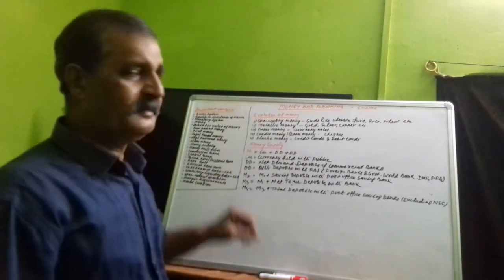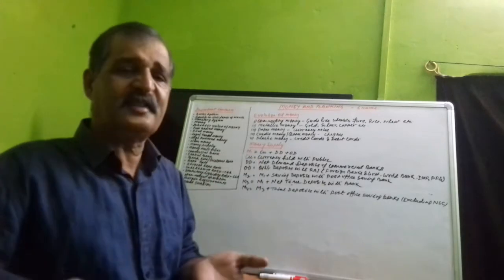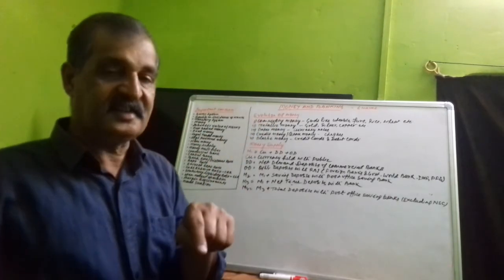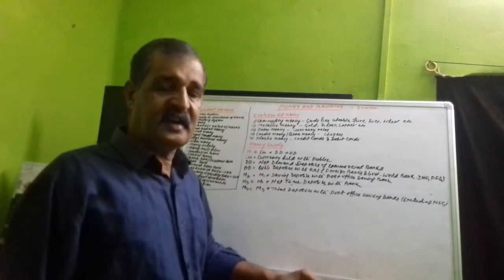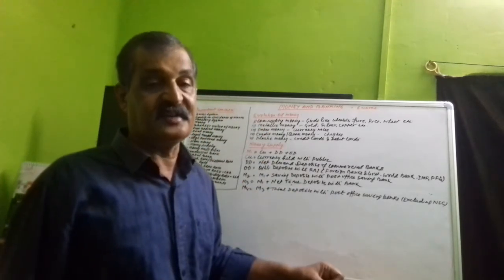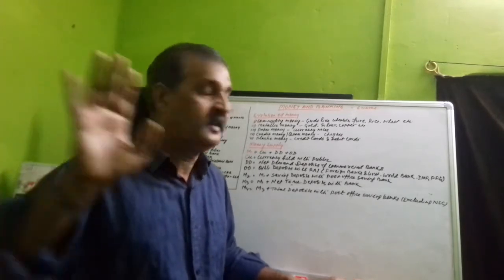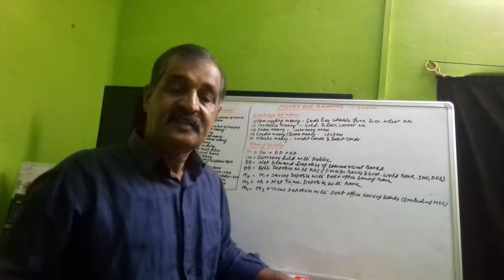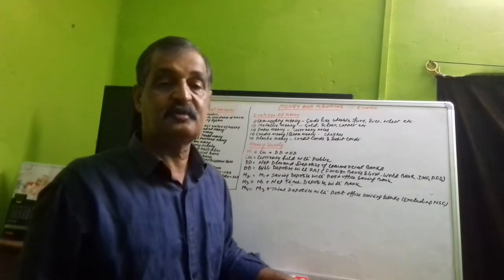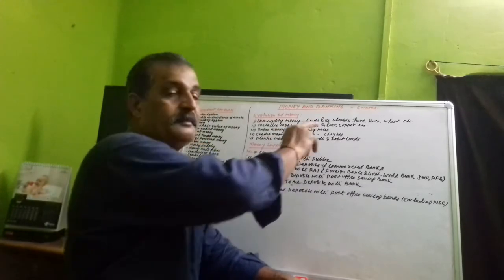Metallic money के बाद इसको carry करना, ले जाना, अगर lost हो जाए, किसी तरह की आपदा हो जाए तो सारे valuables बर्बाद हो जाते थे। इसको facilitate करने के लिए जब 1935 में RBI की स्थापना हुई भारत में, उसके बाद paper money use होने लगा। इसमें सारे currency notes आते हैं — 1, 2, 5, 10 रुपये and so on। इसका advantage यह है कि it is easily portable — एक जगह से दूसरी जगह आसानी से ले जा सकते हैं।